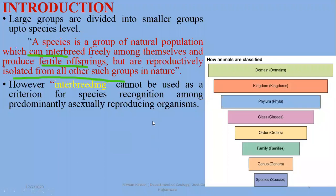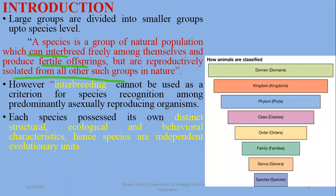Organisms that interbreed and produce fertile offspring are called a species. For organisms that reproduce asexually and cannot interbreed, we classify them on the basis of their morphology and structure. Each species has specific structural, ecological, and behavioral features that differentiate it from other species.